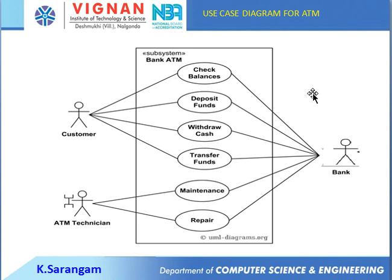Next is the use case diagram for an ATM. A customer inserts a debit card; the bank server performs verification to check whether the card is valid or invalid. If valid, the transaction continues — the customer enters a PIN number and the server verifies it. A valid PIN continues to transaction options including check balance, deposit funds, withdrawal of cash, and transfer funds. Invalid PIN exits the operation. For technical issues, a technician is involved.